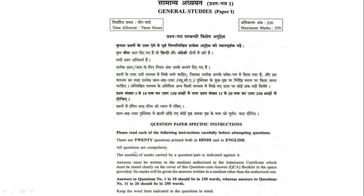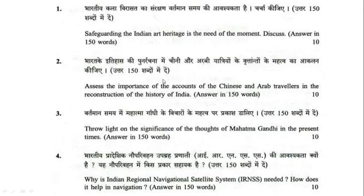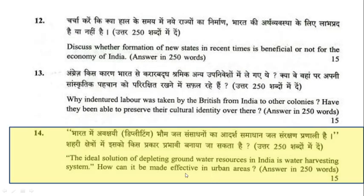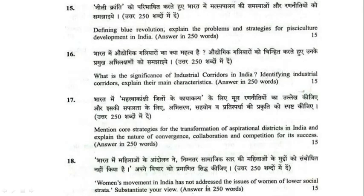In 2018, the GS1 Mains paper again included environment questions. Students must attempt all 20 questions — there is no scope for leaving the environmental portion. Questions included: 'Why is India taking keen interest in the resources of the Arctic region?' 'Define mantle plume and explain its role in plate tectonics.' 'What are the consequences of spreading a dead zone on the marine ecosystem?' 'The ideal solution to depleting groundwater resources in India is a water harvesting system. How can it be made effective in urban areas?'